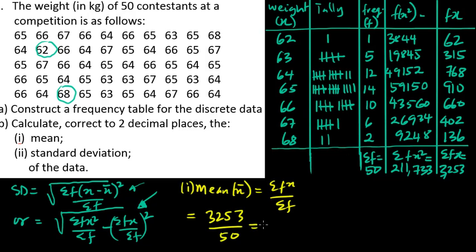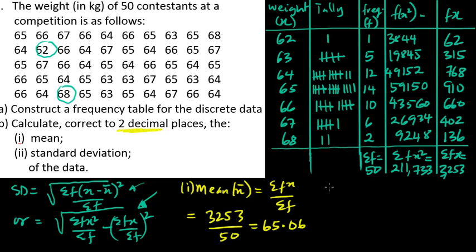The mean x̄ = Σfx / Σf = 3253 / 50 = 65.06, to two decimal places as required.